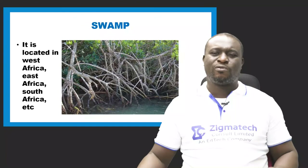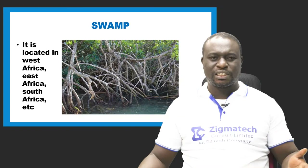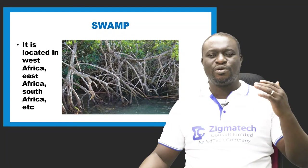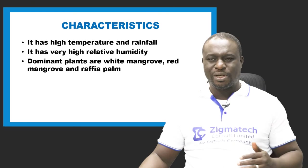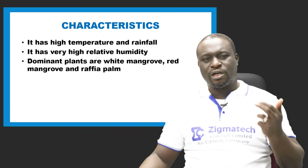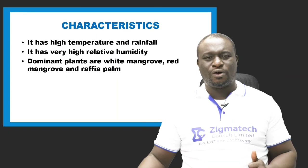Swamp can be found in West Africa, East Africa, and South Africa. It is characterized by high temperature, high rainfall, and very high relative humidity. Plants found in swamp include the white mangrove, red mangrove, and raffia palm.